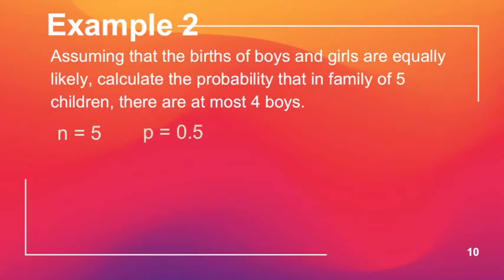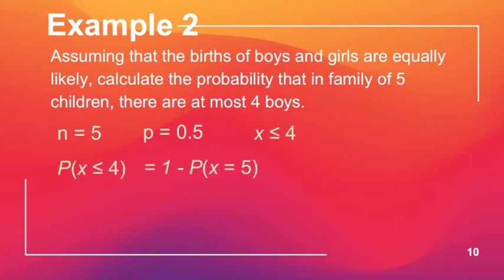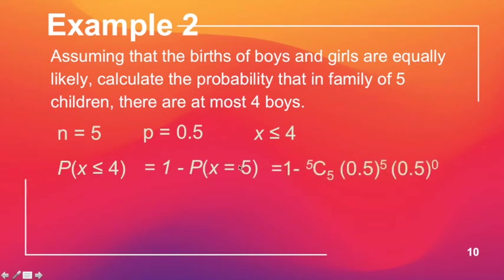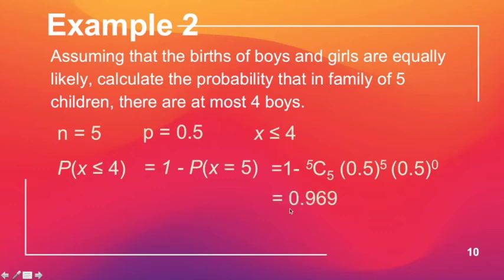You can also solve this using the complement. P(X ≤ 4) = 1 − P(X = 5), because the maximum value of X is 5. Using binomPDF: 1 minus combination of 5 taken 5, times 0.5 to the power of 5, times 0.5 to the power of 0. This confirms the same answer, 0.969.